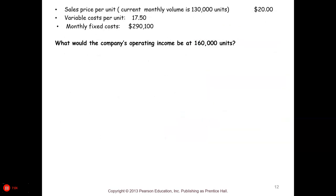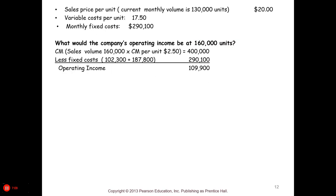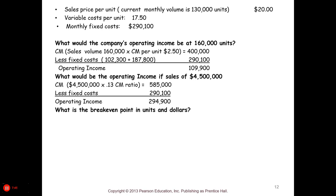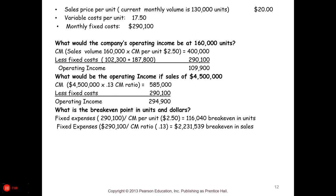At 160,000 units, we take the sales volume times the contribution margin of $2.50, minus the fixed costs, to get operating income. If sales would be a specific dollar amount, we'd use the contribution margin ratio to get our contribution margin, then subtract fixed costs. For the break-even point in units, we take fixed expenses divided by the contribution margin of $2.50 — that gives us 116,040 units to break even. In dollars, it's $290,100 in fixed costs with zero profit, divided by 13%, giving $2,231,539.